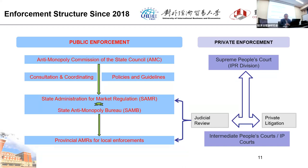For private litigation, cases go to the people's court in a two-tier system. First trial is at the intermediate people's court or IP court. If you want to appeal, it now goes directly to the Supreme People's Court — the highest court — rather than the provincial supreme court as before. This two-tier mechanism is designed to maintain a unified standard in litigation, especially for cases concerning IP and antitrust.